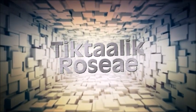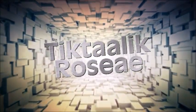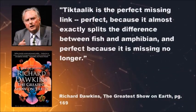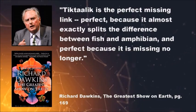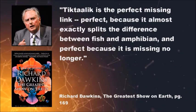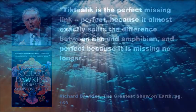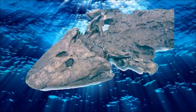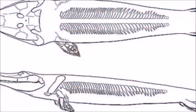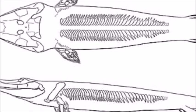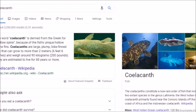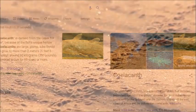The fossil Tiktaalik rosea remains a popular example of a supposed transitional between fish and tetrapods. According to Richard Dawkins, Tiktaalik is the perfect missing link — perfect because it almost exactly splits the difference between fish and amphibian, and perfect because it is missing no longer. However, there are numerous problems with Tiktaalik being an intermediate. First, consider that its fins did not connect to its skeleton, meaning they could not have supported Tiktaalik's weight on land, and are therefore unlikely to be intermediates between fins and legs. They are the same sort of fins that the fish Coelacanth has — Tiktaalik's fins were used for maneuvering while swimming, not walking.